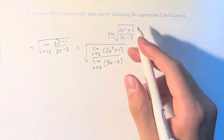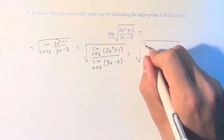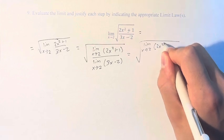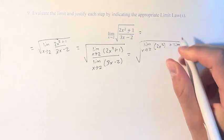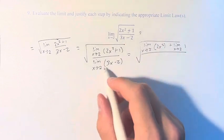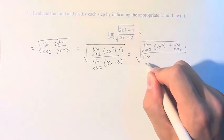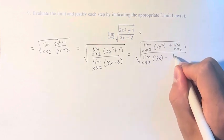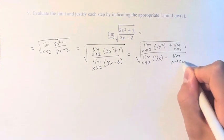And if we have the limit of 2x squared plus 1, that's the limit of 2x squared plus the limit of 1. And the limit of 3x minus 2 is the limit of 3x minus the limit of 2.